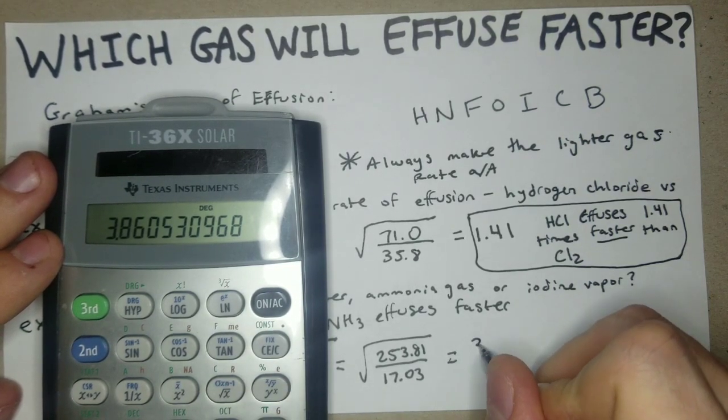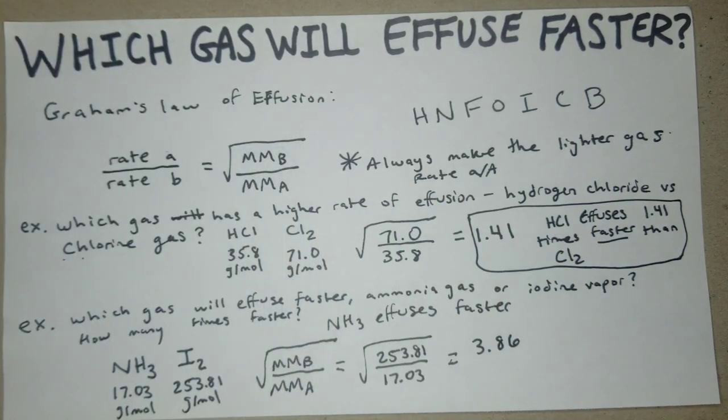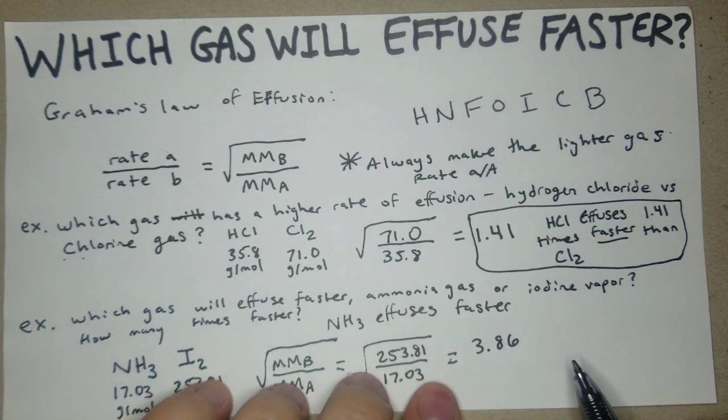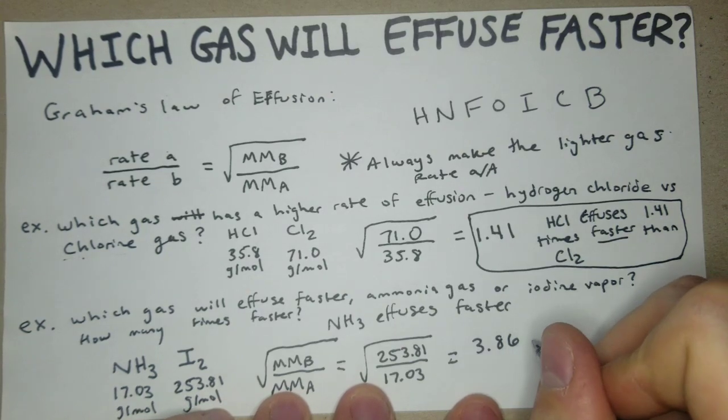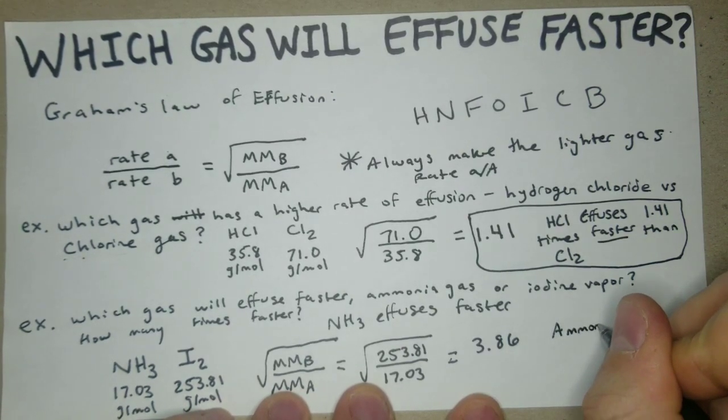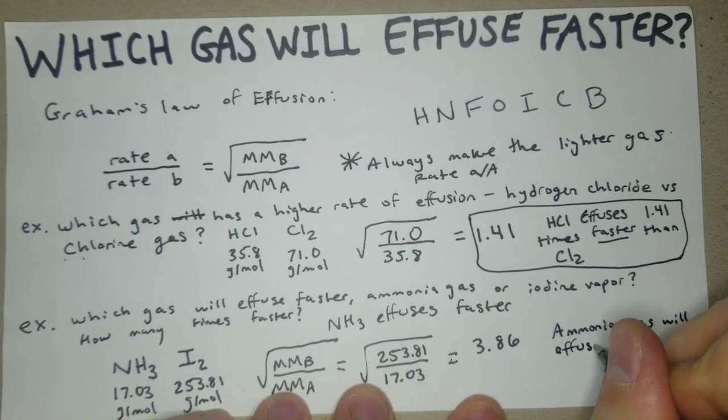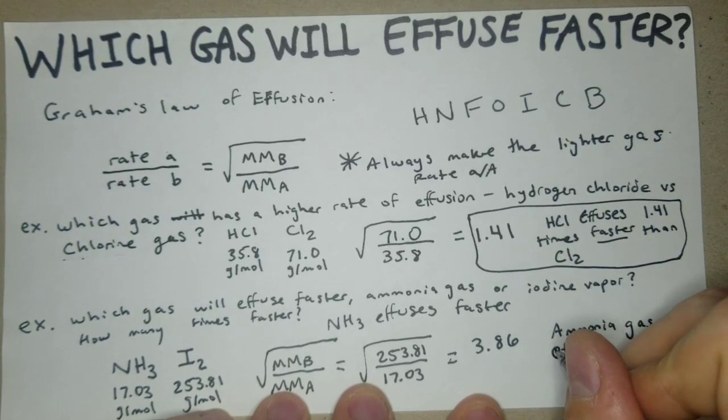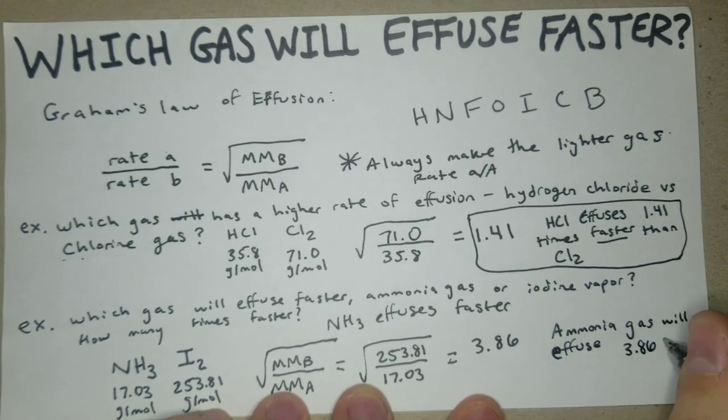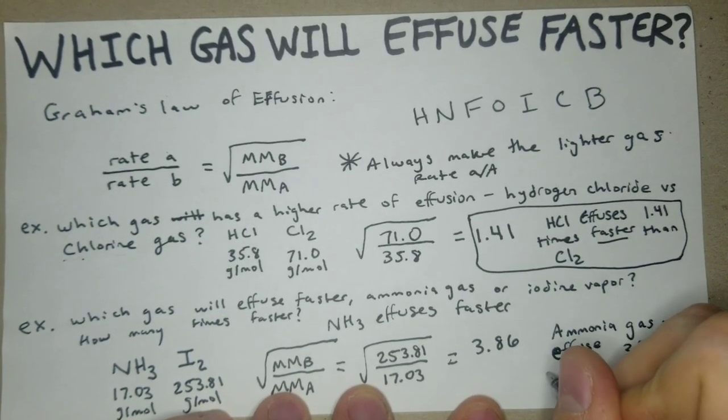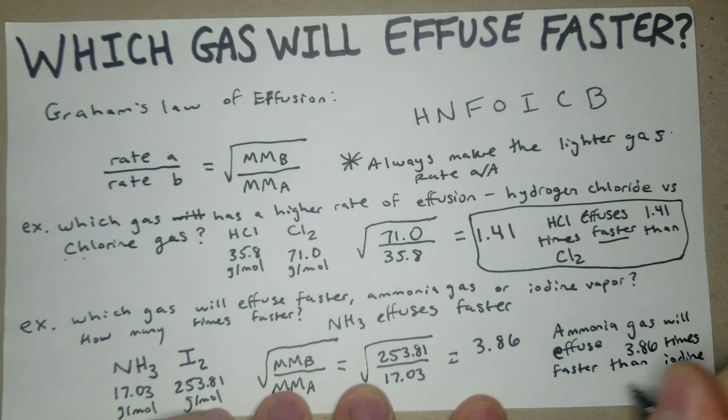And there we go, we got 3.86 as our answer. So really what that means in English is ammonia gas will effuse 3.86 times faster than iodine vapor.